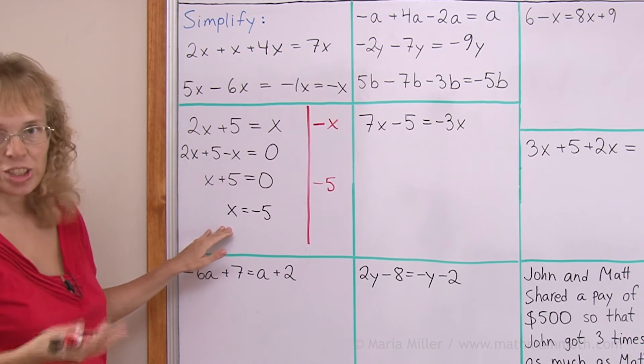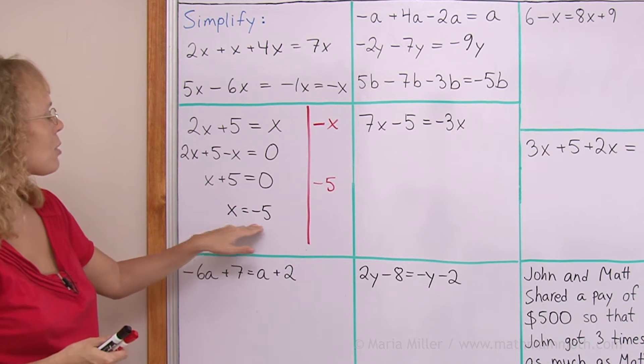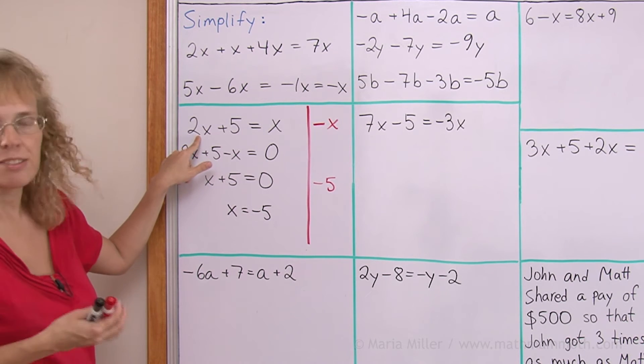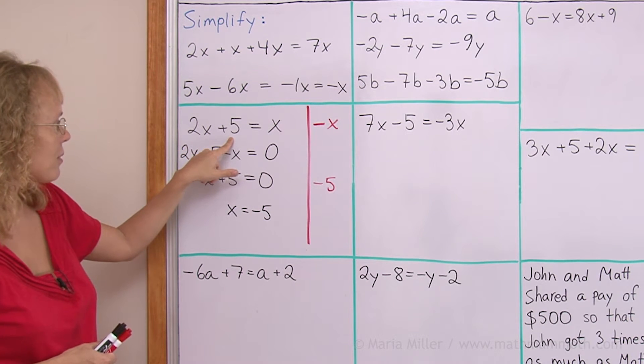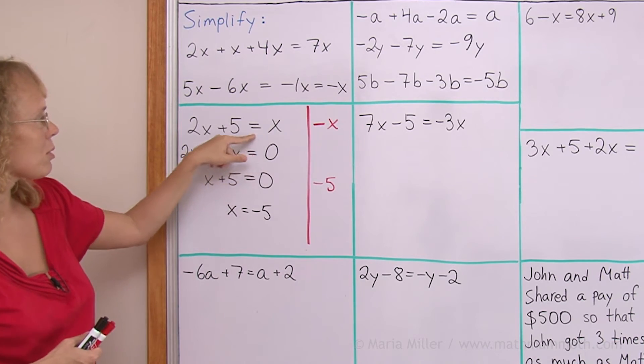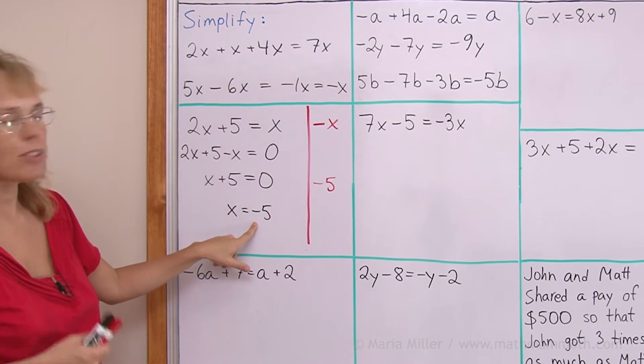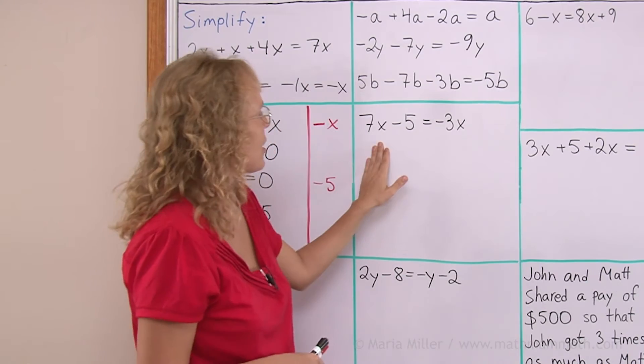And you should always check that this works. So, x equals negative 5. 2 times negative 5 is negative 10, and then plus 5 would be negative 5. Equals x which is negative 5. So, it checks.